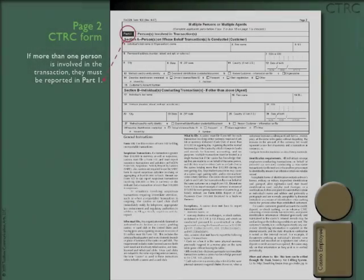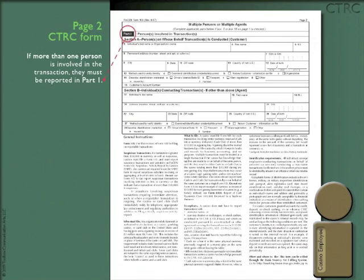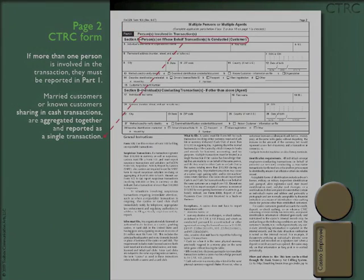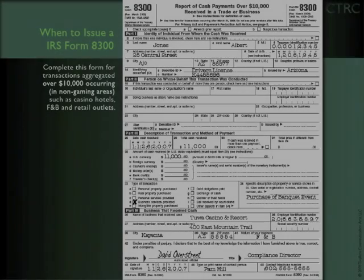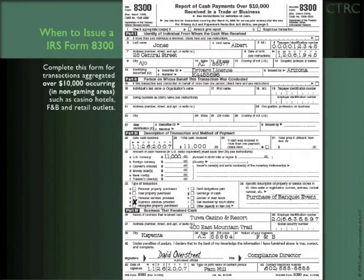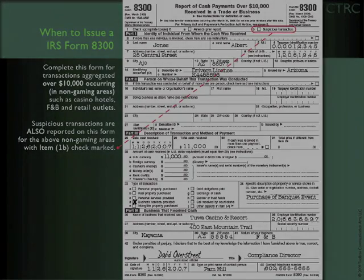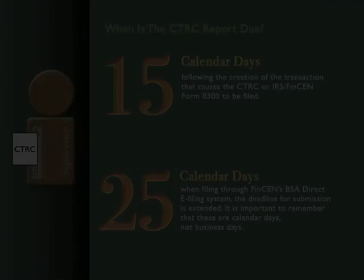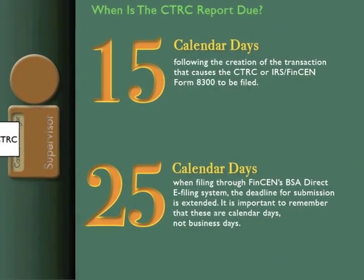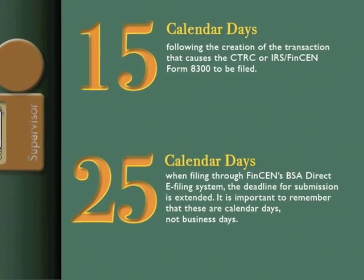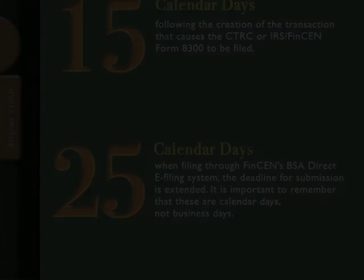If more than one person is involved in the transaction, they must be reported in part 1. Complete this form for transactions aggregated over $10,000 occurring in non-gaming areas, such as casino hotels, food and beverage, and retail outlets. Suspicious transactions are also reported on this form for the above non-gaming areas. It is 25 calendar days when filing through FinCEN's BSA Direct e-filing system, in which the deadline for submission is extended.